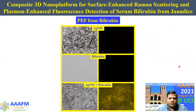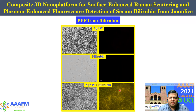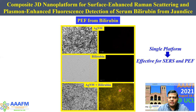This is the plasmon-enhanced fluorescence from bilirubin. Silver nanowire alone does not display any fluorescence, and neither does bilirubin alone. But when bilirubin is deposited on our nano platform containing three-dimensional random crushed woodpile silver nanowires, we can see fluorescence behavior emerge. This is a fast detection method to determine bilirubin concentration present in the analyte. We used this single platform to study both SERS and PEF.